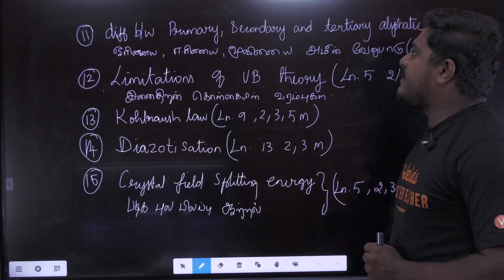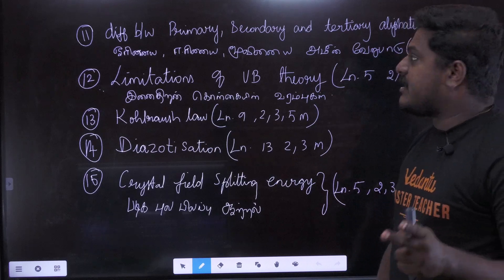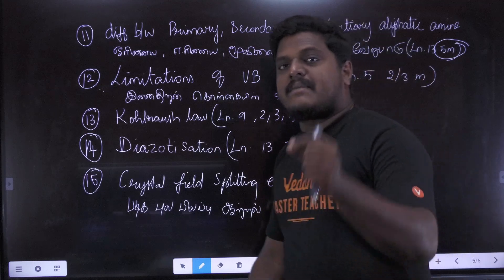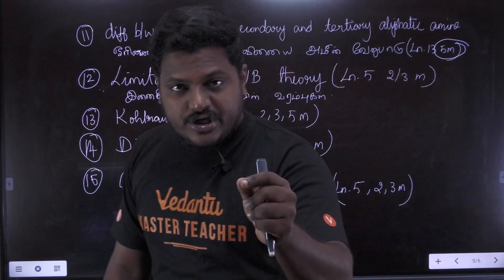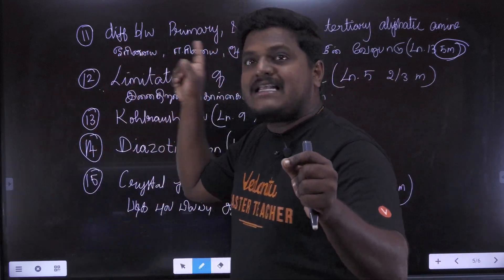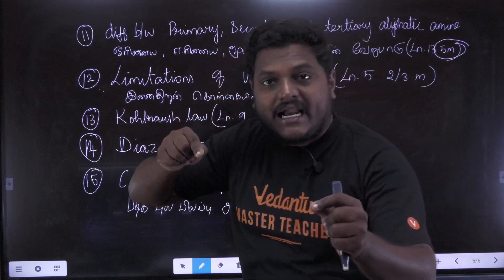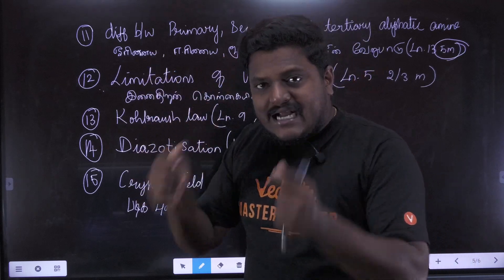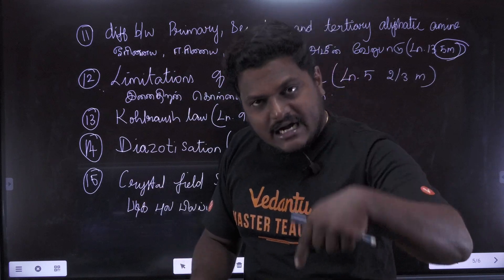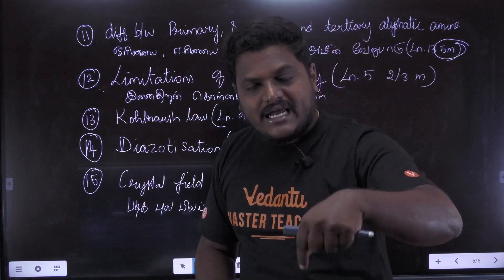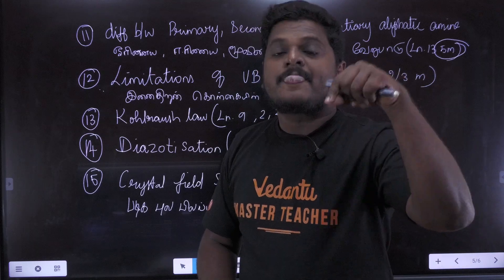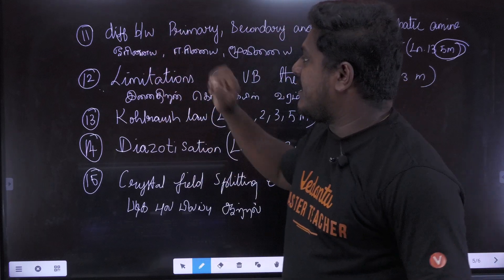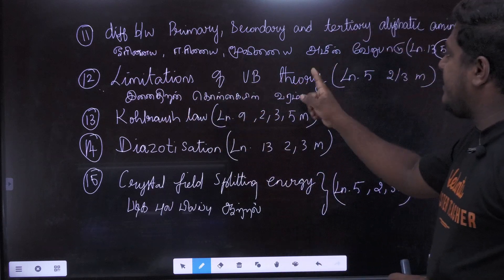The difference between primary, secondary, tertiary and aliphatic amines — this is a very important 5-mark question. The limitations of VB theory — what do you think? It can be 2 mark, 3 mark, or 5 mark. This is the ultimate question.